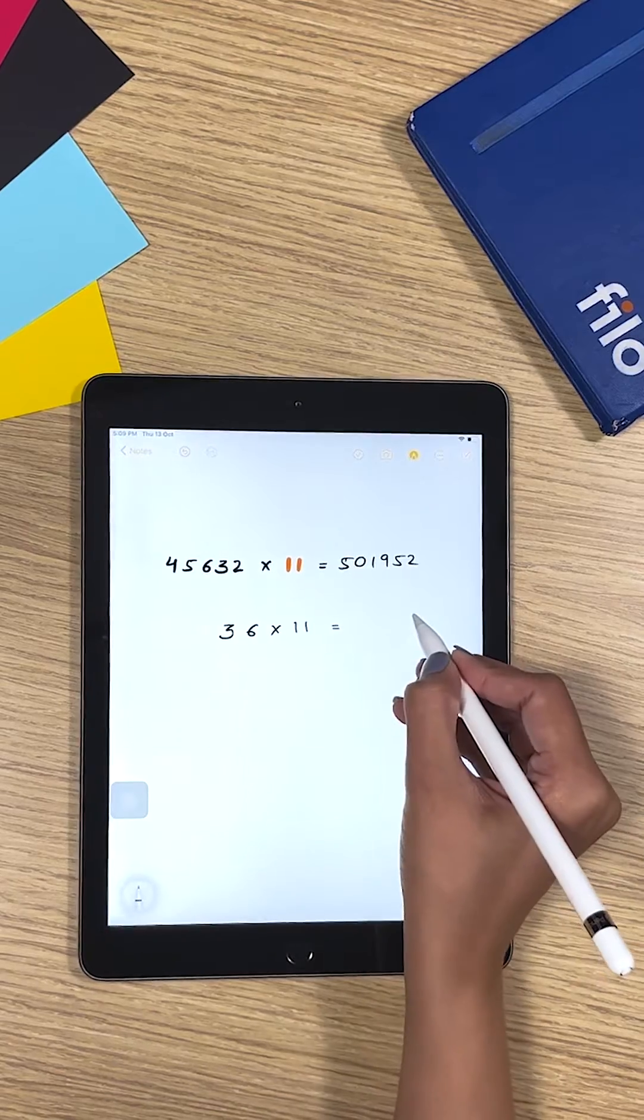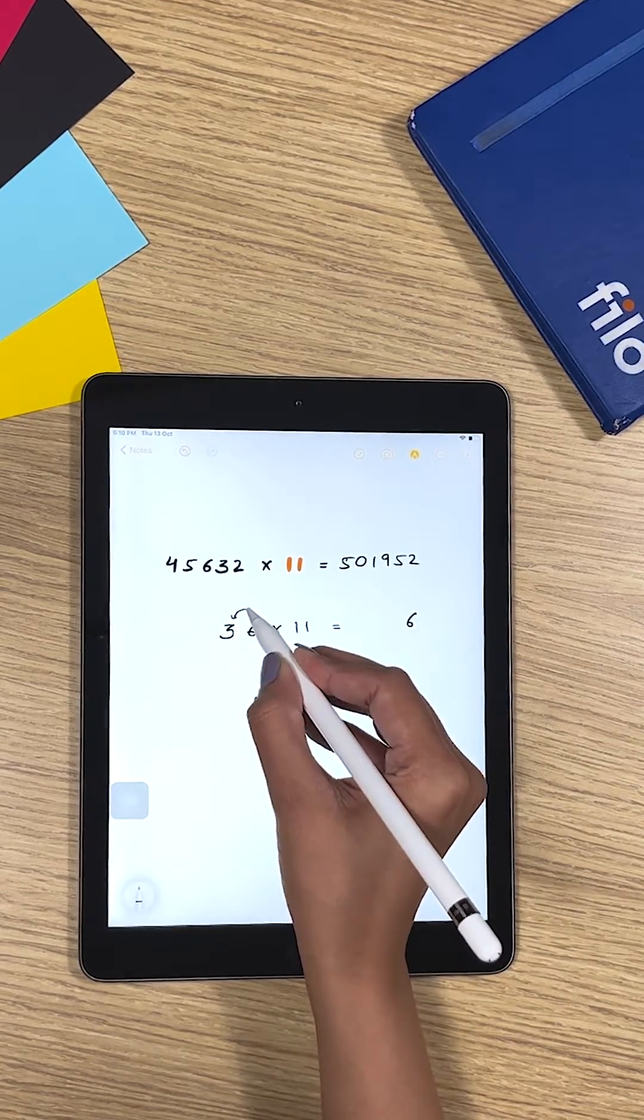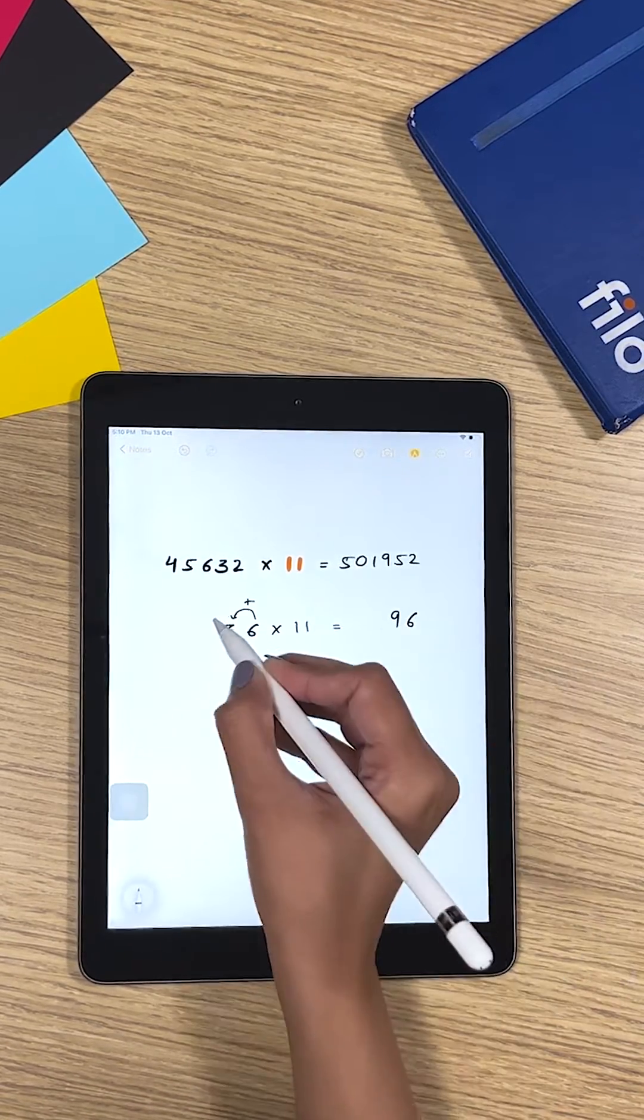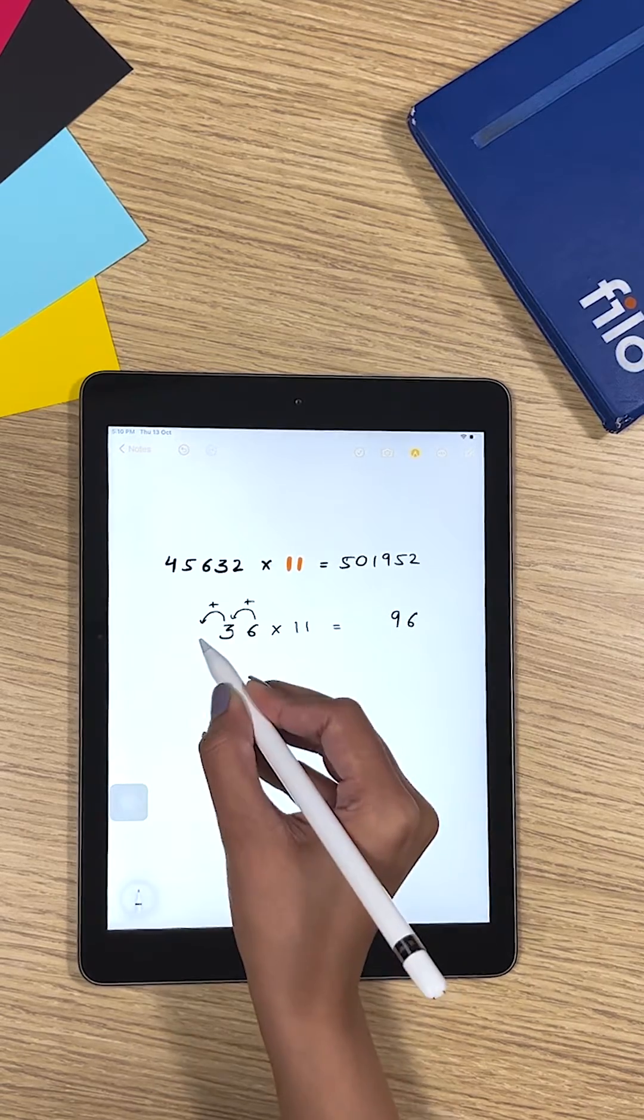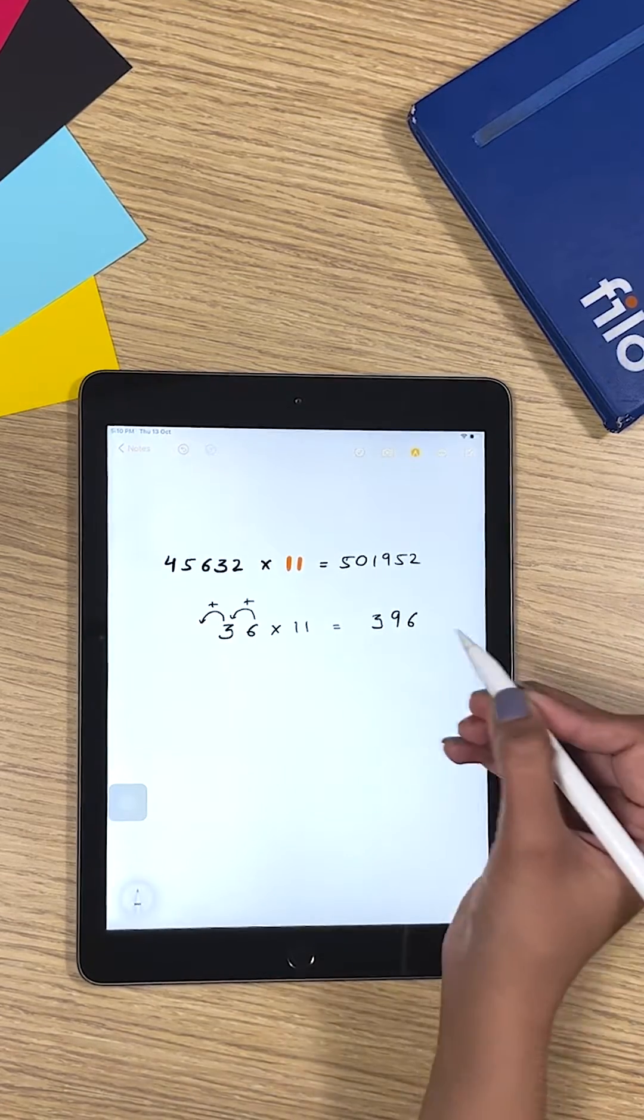You copy the last digit as it is, and then you add 6 to the next number, that becomes 9. Then you add 3 to the next number, and since there's nothing there, we have only 3. So 396 becomes your answer.